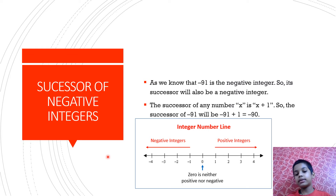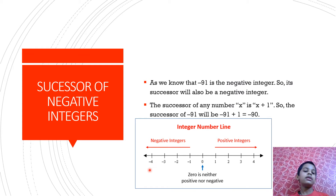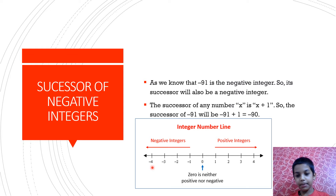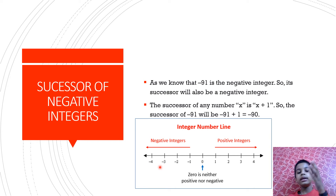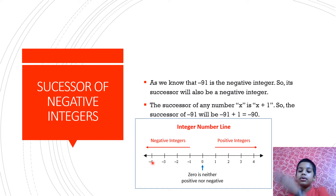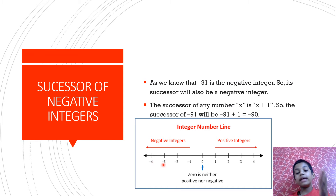Now let's visualize it. Let's say this is minus 4. Minus 4 plus 1 — plus 1 is going to the right, so minus 4 plus 1 is going one step to the right, which is minus 3. In the same way, if this is minus 91, going one step plus 1 means going one step to the right, which is minus 90.